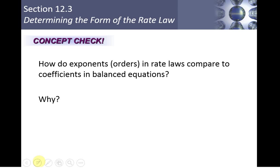How do the exponents compare to the coefficients in the balanced equation? The answer is: there's no relationship whatsoever to the coefficients. The order has to be determined experimentally. While the reaction tells us what reacts and what's produced, it does not tell us the mechanism, and so it can't tell us how important each reactant is to the overall rate.